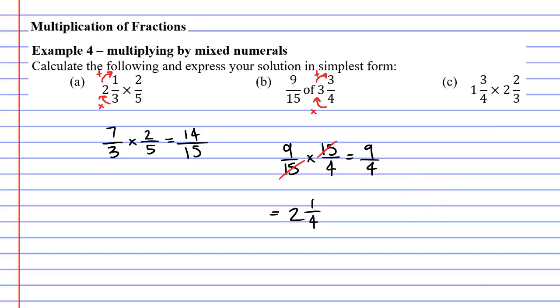Let's now move on to question C. This time we have two mixed numerals but that's okay. We just need to convert both of them to an improper fraction. We'll start with the first one. We times first then add second. 4 times 1 is 4 plus 3 is 7.